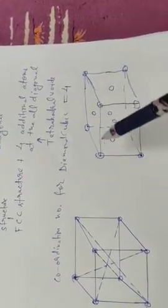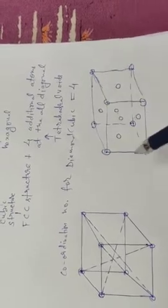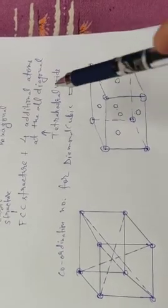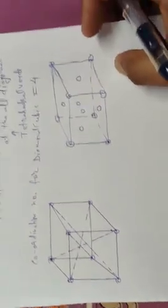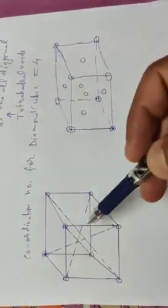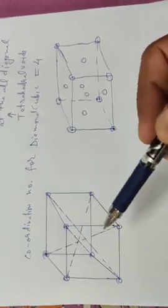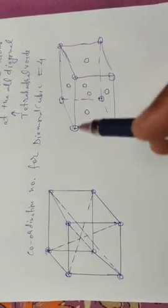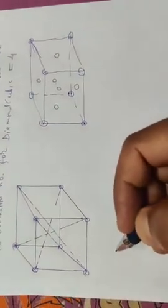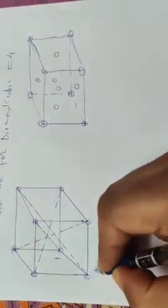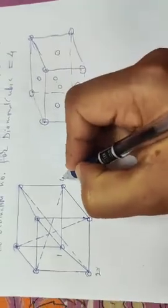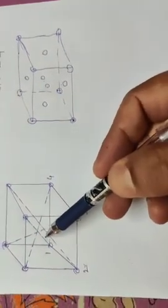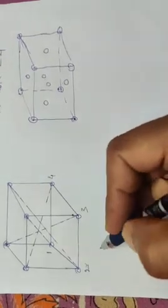Now I will place four additional atoms at all diagonals. Let us consider this is the FCC lattice. We have four diagonals — first, second, third, and fourth. I will place these additional atoms at all diagonals. Let us consider the atoms as one, second, third, and fourth. I will place the first atom along this diagonal at the one-fourth position.